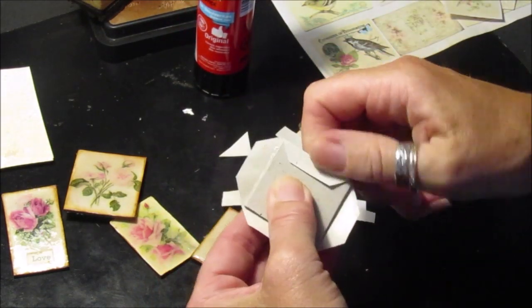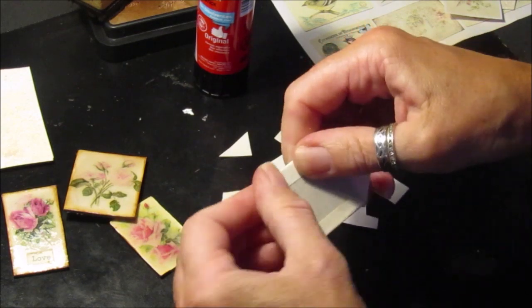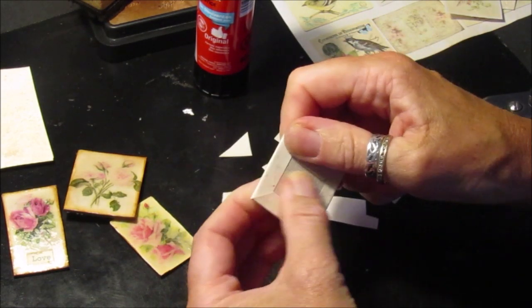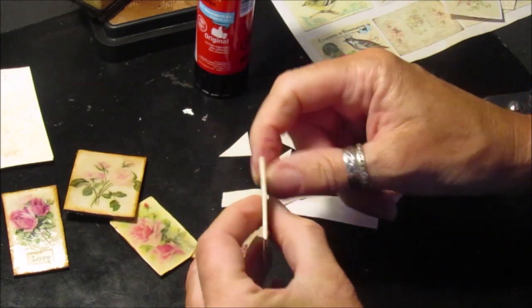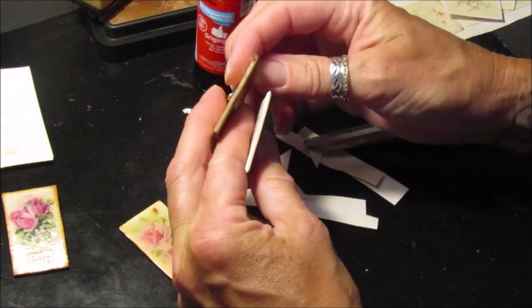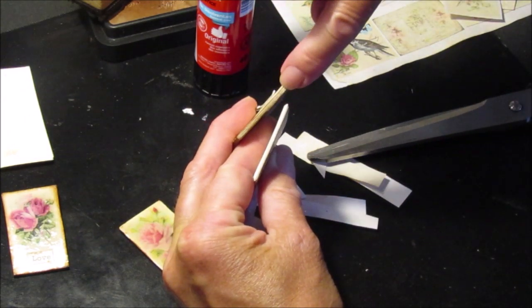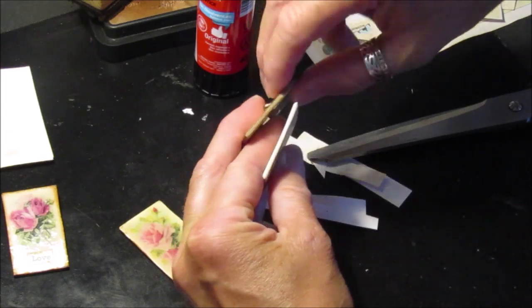Doesn't matter too much about the back because we're going to cover that up anyway with a piece of card. So that gives you a better edge. You've got the paper edge on this one and the cardboard edge on this one. If it gets damp or anything like that, this will start coming apart.